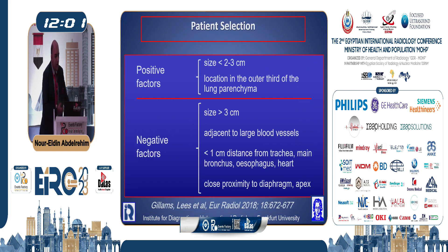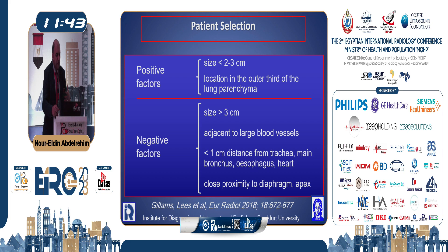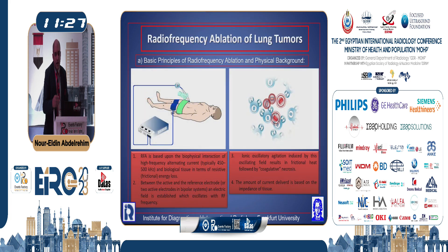Positive factors to ensure adequate and complete ablation: lesion size between 2 or 3 centimeters and location in the outer third of the lung parenchyma to minimize the heat sink effect, which increases the effectiveness of the ablation procedure. Negative factors: size is the most important — lesions more than 3 centimeters in diameter, adjacent to large blood vessels, or less than 1 centimeter from important structures like the aorta, trachea, bronchus, heart, or in contact with the apex or lung base.